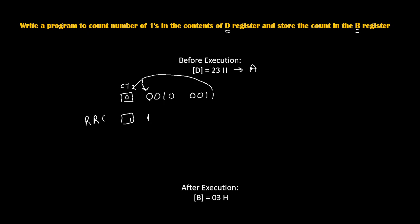The CY flag will become 1. The remaining bits shift one position to the right: 0 shifts to the next position, 0 shifts, 1 shifts, 0 shifts, 0 shifts, 0 shifts, and 1 shifts to the last position. So the number has become 91H.